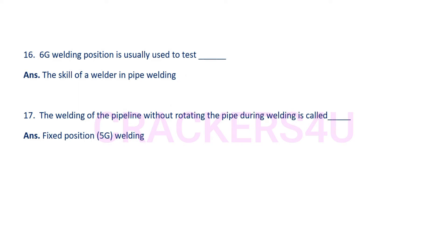Question number seventeen: The welding of a pipeline without rotating the pipe during welding is called fixed position welding, or position 5G. In this position, the welder has to move according to the condition of the pipeline in different positions, such as vertical, downhand, and overhead positions.